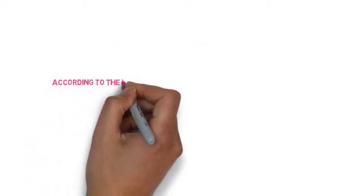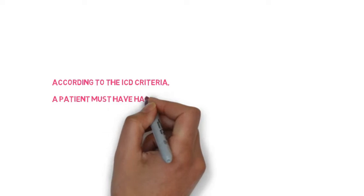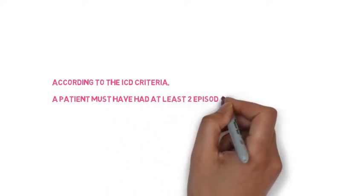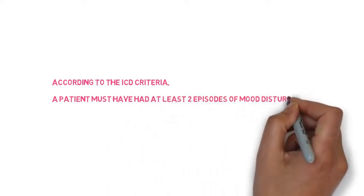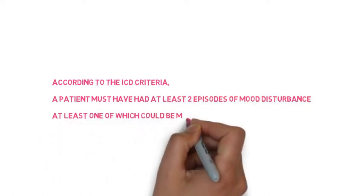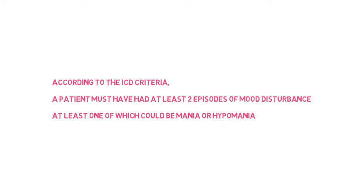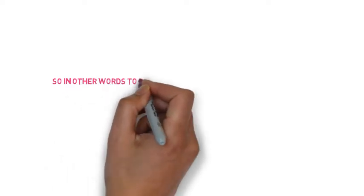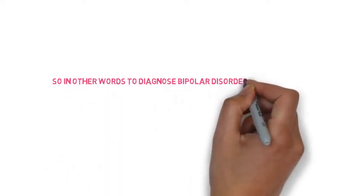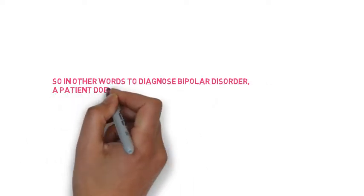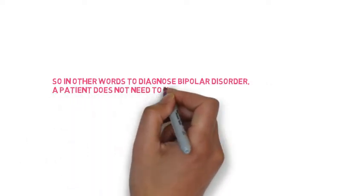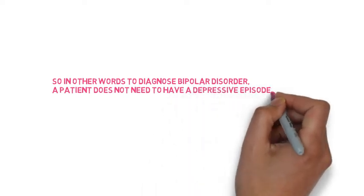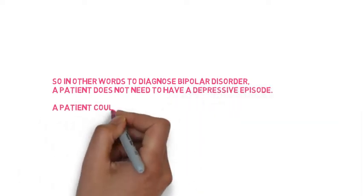According to the ICD criteria, a patient must have at least two episodes of mood disturbance, at least one of which must be mania or hypomania, to diagnose bipolar disorder. In other words, to diagnose bipolar disorder, a patient does not need to have a depressive episode.